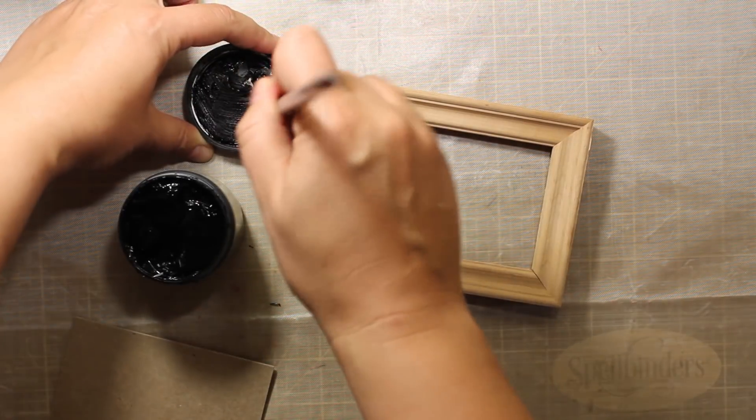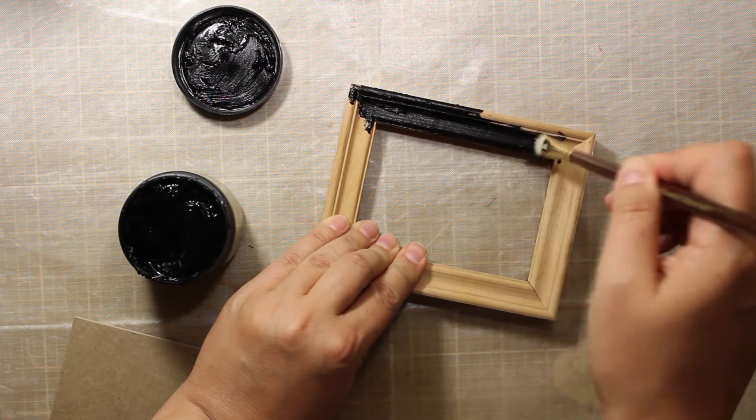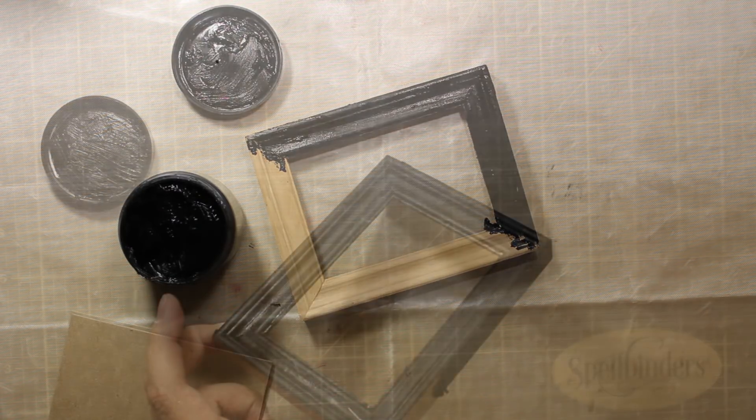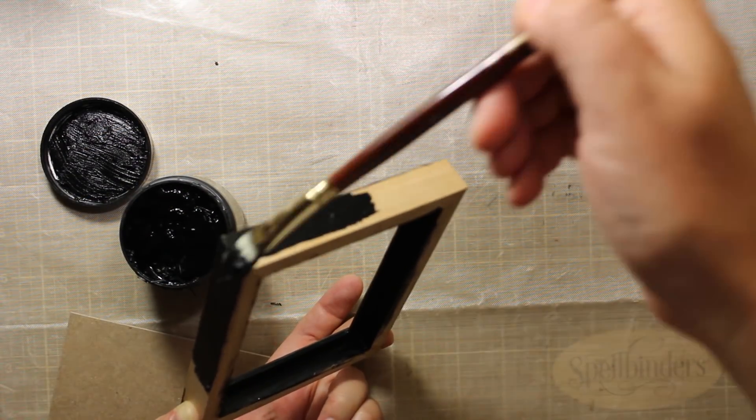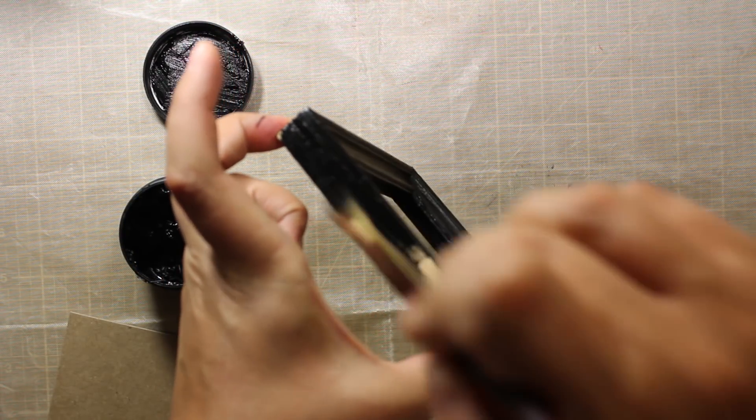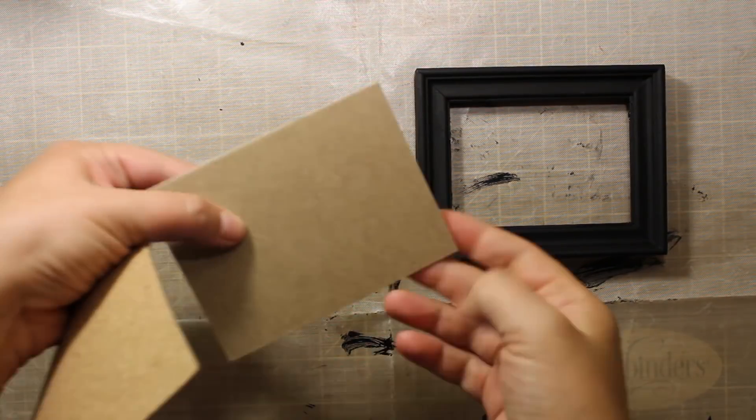Next I'm going to cover the entire frame with black gesso. I'm applying it both on the front and at the back of the frame and then I'm going to let it dry completely. This is a rather quick drying product by the way.